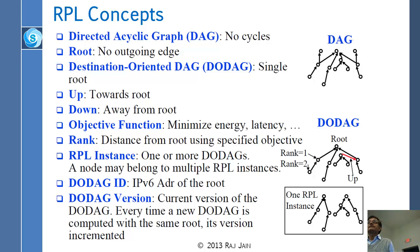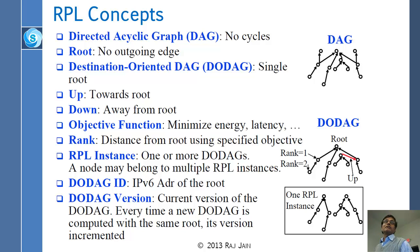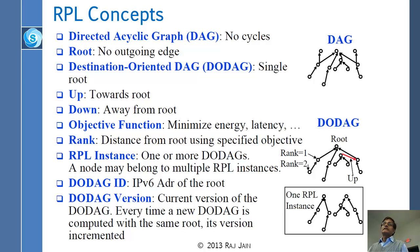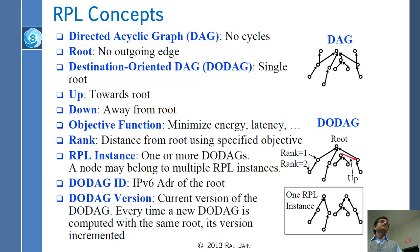DODAG stands for Destination-Oriented Directed Acyclic Graph. If there are more than one root, it is a DAG; if there is only one root, it is a DODAG. 'Up' always means going towards the root, and 'down' means going away from the root. The objective function defines how you measure your distance from the root — the designer decides what to minimize: latency, energy, or something else. That's not specified by the protocol; you assign a numeric distance based on whatever function you choose.